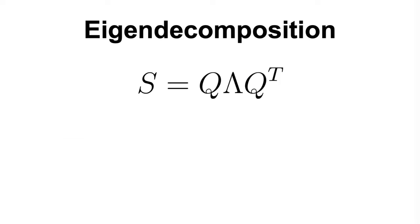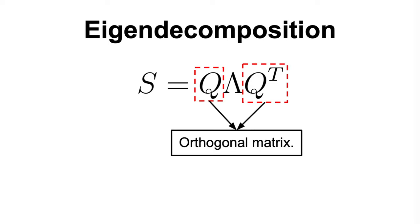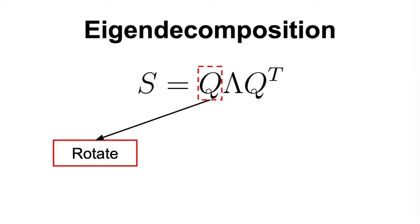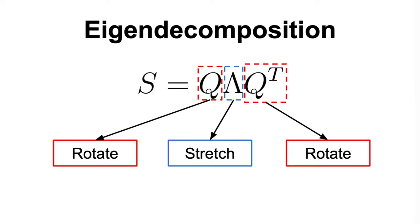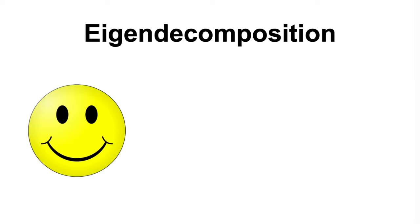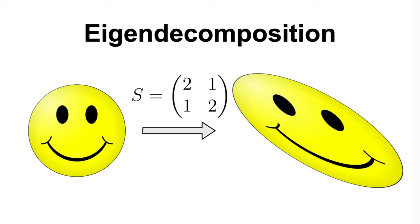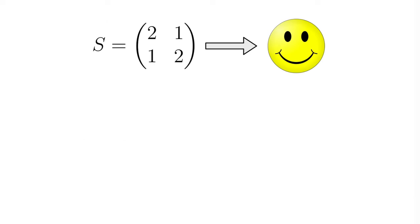Thus, the eigendecomposition of a symmetric matrix can be visualized as a transformation that first rotates the vector, then stretches it, and then rotates it back. Let's see what I mean by that by looking at how a symmetric matrix transforms a smiley face. We can consider each pixel in the image as being a vector, and let's say that we want to transform all the vectors in this image using the following symmetric matrix.